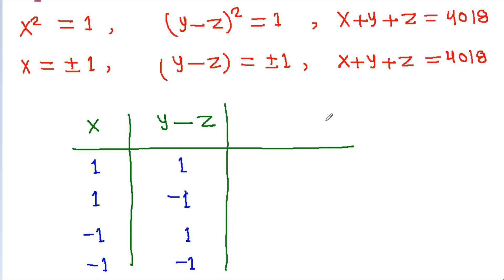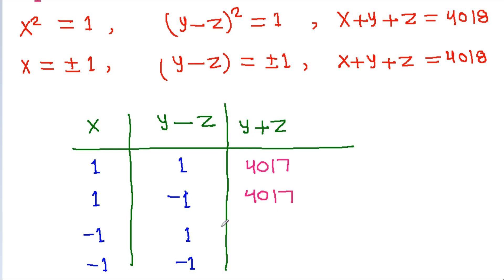From x + y + z = 4018, we find y + z for each case. When x = 1, y + z = 4017; when x = 1 again (second case), y + z = 4017; when x = -1, y + z = 4019; and for the last case, y + z = 4019.